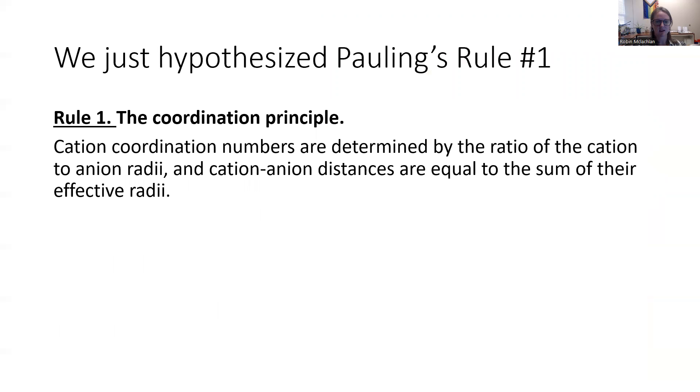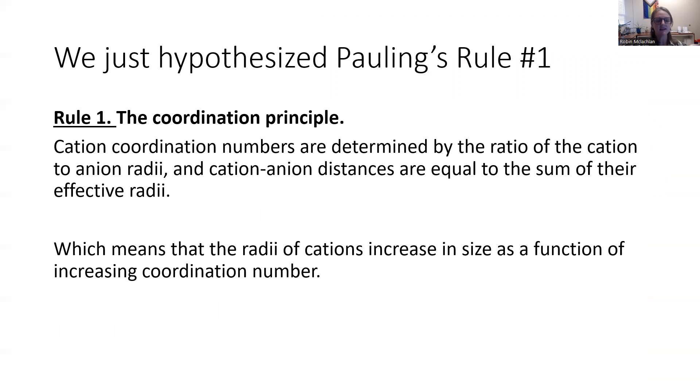I'm not going to read the actual Pauling's rule, I'm just going to summarize it. Basically, it says that the radii of cations increase, as the radii of cations increase in size, so does the coordination number. The larger the cation is, the more anions can fit around it. So that's Pauling's rule number one.